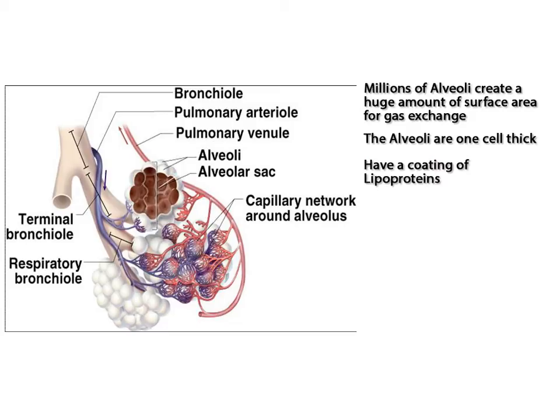The alveoli are supplied with stretch receptors — nerve endings that are sensitive to stretch. During inhalation, they signal when the alveoli are full enough, thus marking the onset of exhalation.